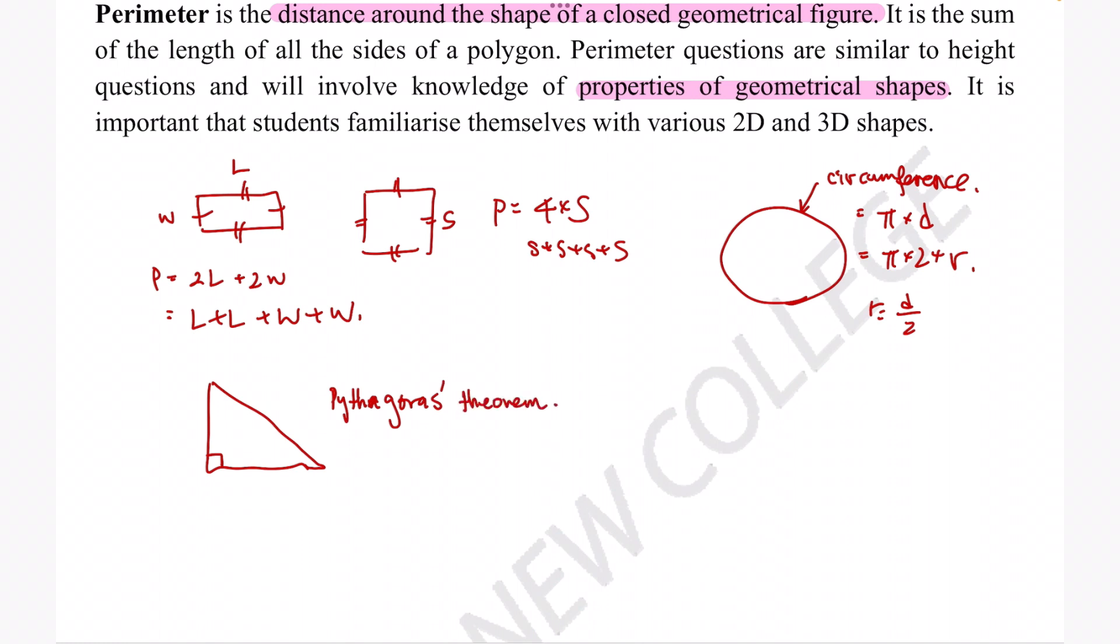Because of this theorem, questions can ask you to calculate a missing line of the triangle and then you have to figure out the perimeter.